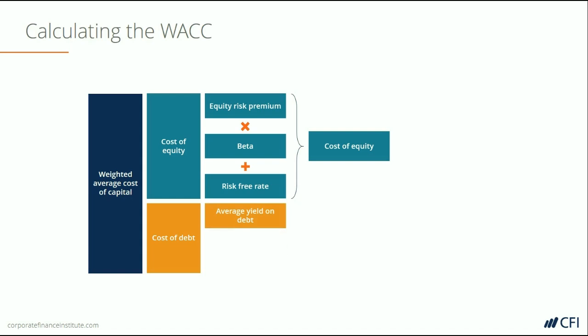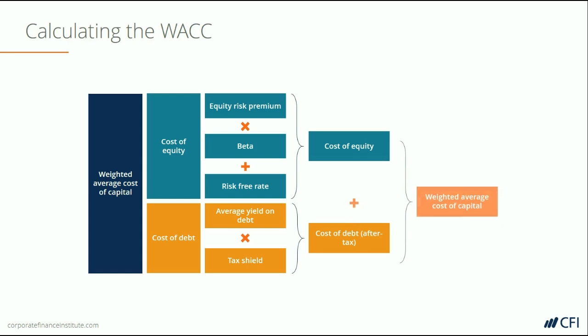On the debt side of things, it's a little simpler. You can take the average yield on the debt of the company and then multiply it by one minus the tax rate, because there is tax deductibility of interest but no tax deductibility on the equity side. If the company doesn't have public debt or any debt with an observable yield, you can look at a similar company with a similar credit rating and assess their cost of debt. So we get the cost of debt after tax, multiply the cost of equity by the proportion of capital that's equity, multiply the cost of debt by the proportion of capital that's debt, and at the end we get the weighted average cost of capital for the company.